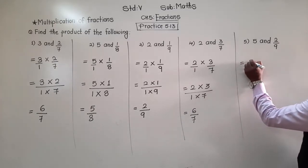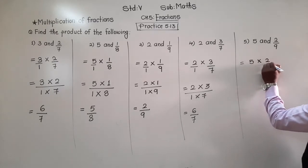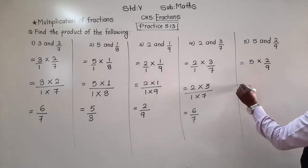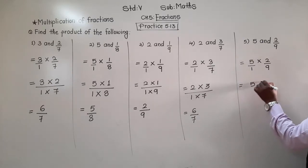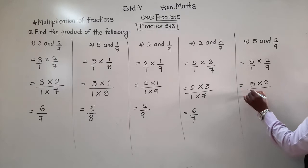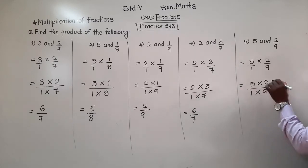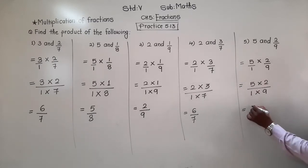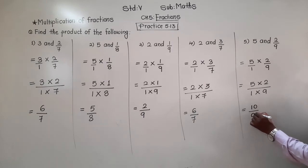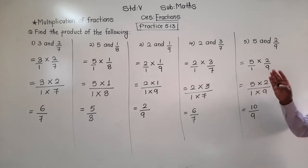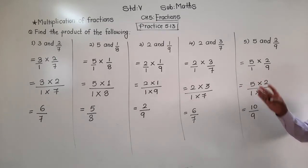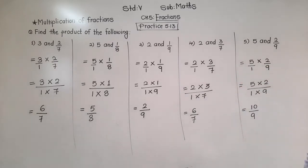Next: 5 multiplied by 2 upon 9. Here, 5 has denominator 1. Multiply numerator with numerator: 5 × 2 = 10, denominator with denominator: 9 × 1 = 9. So, 10 upon 9 is the answer. In this way, we have to multiply fractions. Pause this video, write this in your long book, and then we will see the next examples.